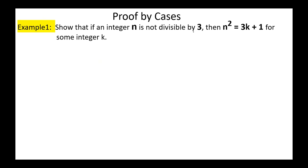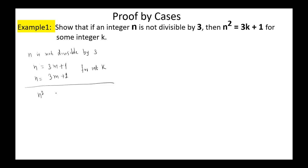Example: Show that if an integer N is not divisible by 3, then N squared equals 3K plus 1 for some integer K. N is not divisible by 3 is equivalent to N equals 3m plus 1 for some integer m, or N equals 3m plus 2 for some integer m. In the first case, N squared equals (3m plus 1) squared, which is 9m squared plus 6m plus 1, which is 3(3m squared plus 2m) plus 1, which is 3K plus 1 for some integer K.